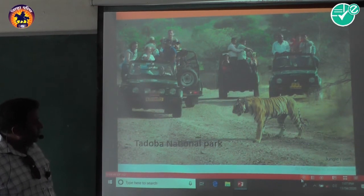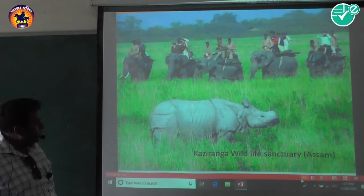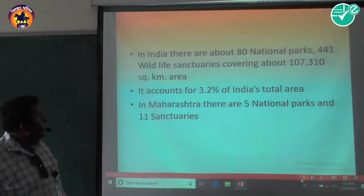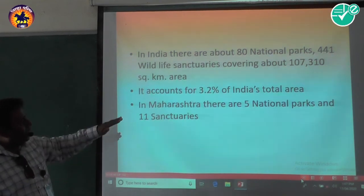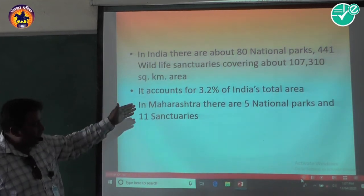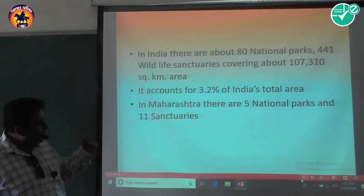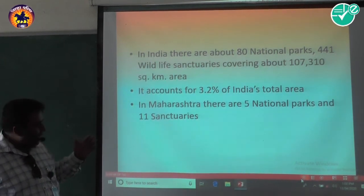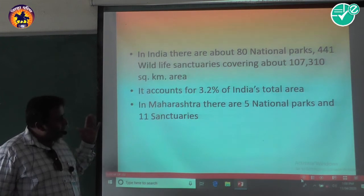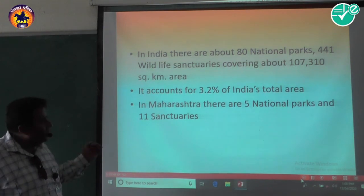Corbett National Park is in Uttar Pradesh and Kaziranga Wildlife Sanctuary is in Assam. In India, there are about 80 national parks and 441 wildlife sanctuaries covering about 1,07,310 square kilometers, which accounts for 3.2 percent of India's total area. In Maharashtra, there are 5 national parks and 11 sanctuaries.